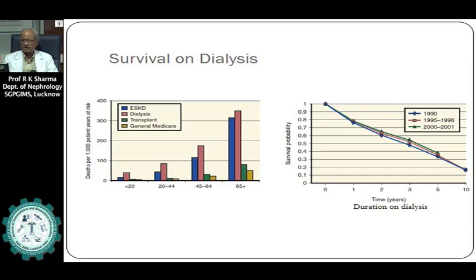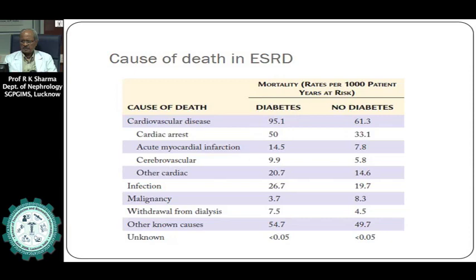Various fistula options are available, but the ideal is to create the fistula at the wrist—the radiocephalic fistula. If veins are not available there, other sites such as brachial, brachiobasilic, or brachiocephalic can be used. Complications of these fistulae include stenosis, thrombosis, aneurysm formation, and infections. PTFE grafts, also known as Gore-Tex, are used for cannulation but have a higher tendency for clotting and infections compared to arteriovenous fistulae.